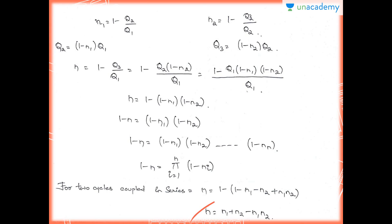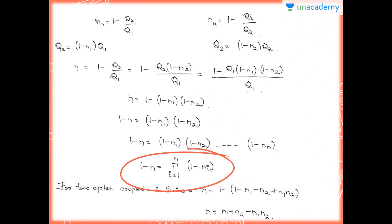For a sodium-mercury-steam tertiary cycle, if η1 = 0.5, η2 = 0.4 and η3 = 0.4, by substituting in the equation 1 − (0.5 × 0.6 × 0.6), you get an overall efficiency of 0.82. Of course, there are other losses which have not been considered here.